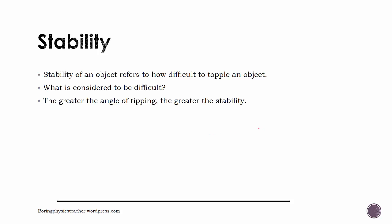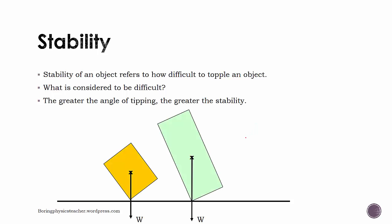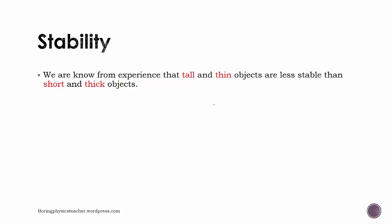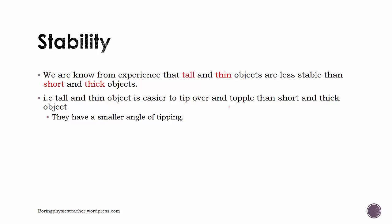We can measure stability by the angle of tipping: the greater the angle needed to topple the object, the greater its stability. Comparing two objects A and B, object B requires a smaller tipping angle and is therefore less stable than object A. From experience, tall and thin objects are generally less stable than short and thick objects because they have a smaller angle of tipping.